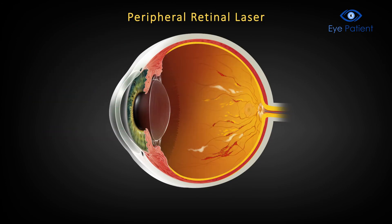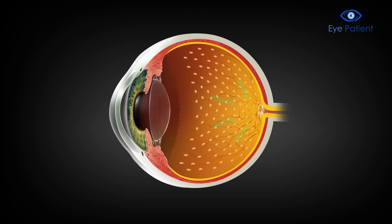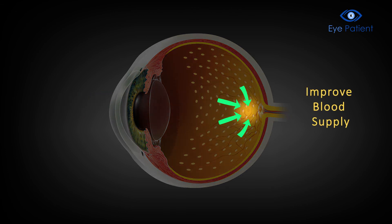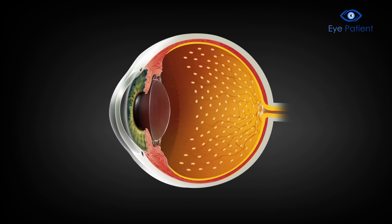Peripheral retinal laser is used to treat the retina and improve blood supply. This will help prevent the abnormal blood vessels from growing again.